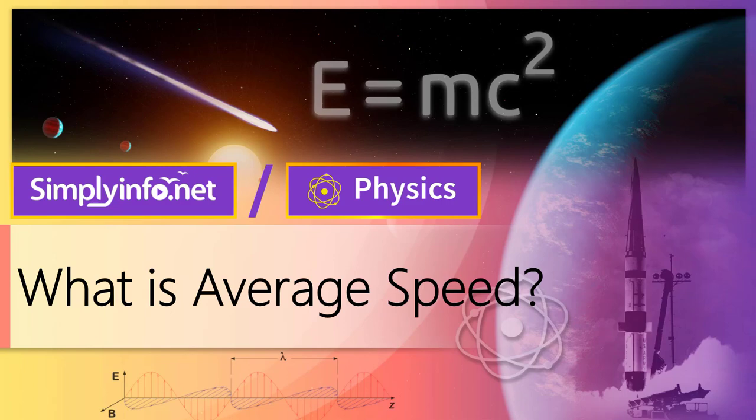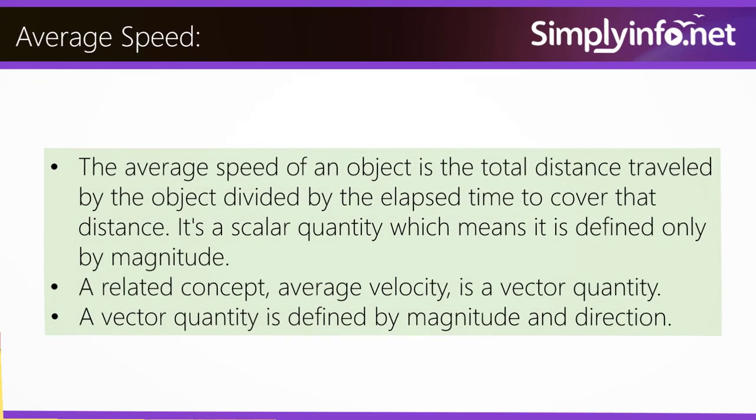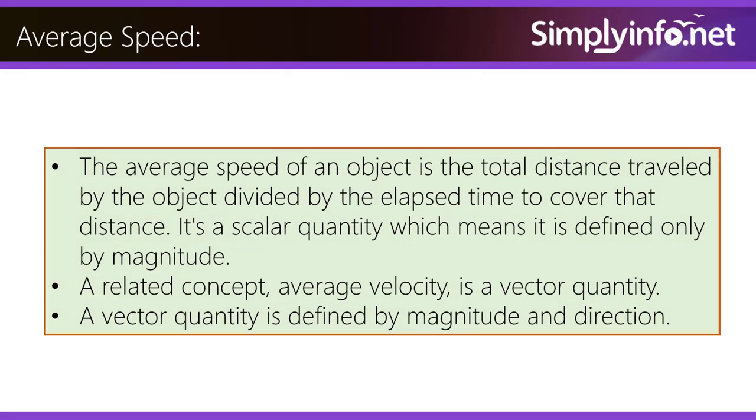What is Average Speed? The average speed of an object is the total distance travelled by the object divided by the elapsed time to cover the distance. It's a scalar quantity which means it is defined only by magnitude.